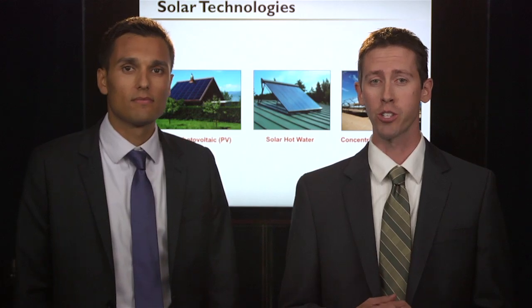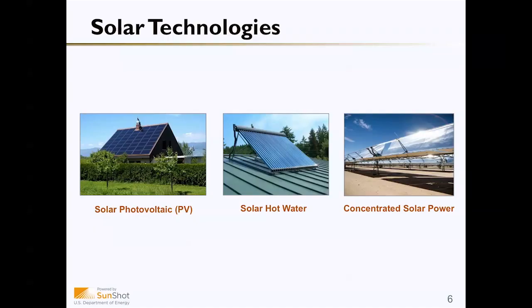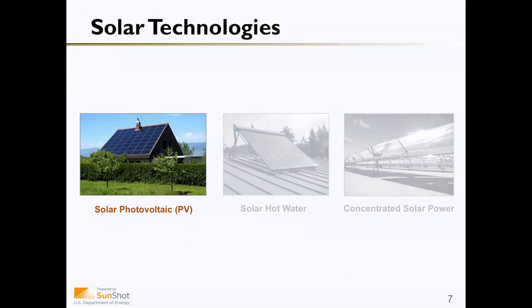There are three basic solar technologies. First is solar photovoltaic, or PV — throughout this presentation when we say solar or PV, this is the technology we're referring to, and it is used to create electricity. The second is solar hot water, where heat from the sun is transferred to an antifreeze solution which is then used to heat water. And finally there's concentrated solar power, the largest and least common of the three, which transfers heat from the sun to a salt-like solution to boil water, run a turbine, and create electricity.